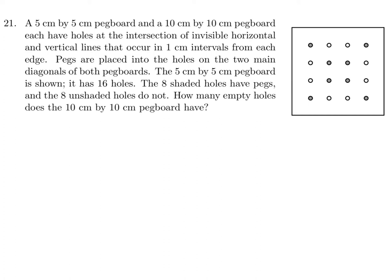This question took me a while to figure out. Are the two pegboards overlapping? Are they on top of each other? Reading carefully, they're just giving you an example of a 5x5, and then saying if you apply the same principle to the 10x10, how many empty holes would there be?